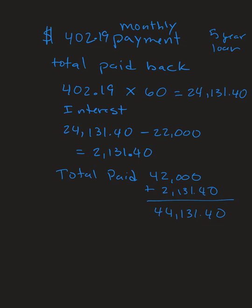That wasn't too bad, but the only thing I didn't like was the $402 payment — that seems like a lot. I've never had a car payment before; I've always bought cars used. I wasn't sure about committing to $402 a month. The salesman says he can lower my payment, so he crunches some more numbers and says for a seven-year loan, the payment will be $297.69.